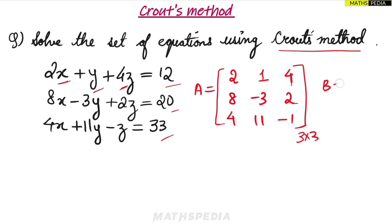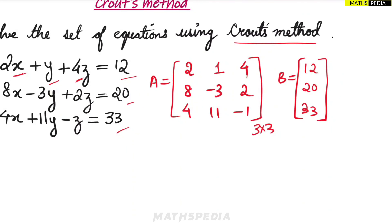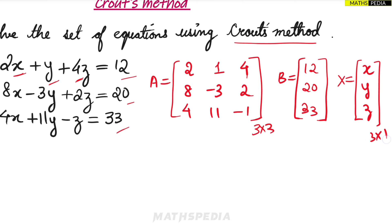The B matrix is a column matrix containing the constants b1, b2, b3 — here the values are 12, 20, and 33. The X matrix is also a column matrix containing the unknown variables x, y, z. Both are 3×1 matrices with 3 rows and 1 column.